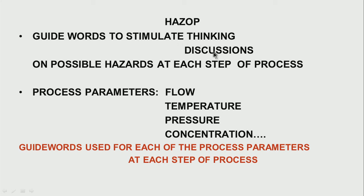For each process parameter — such as flow rate, temperature, pressure, and concentration — guide words are used to determine whether deviations can result in a hazard. The guide words are: (1) no/not/none, (2) more/higher/greater, (3) less/lower, (4) as well as, (5) part of, (6) reverse, and so on. For example, 'no' implies there is no flow, no temperature, no pressure — and we ask what the consequence would be. 'More' means the flow or pressure becomes larger than intended.